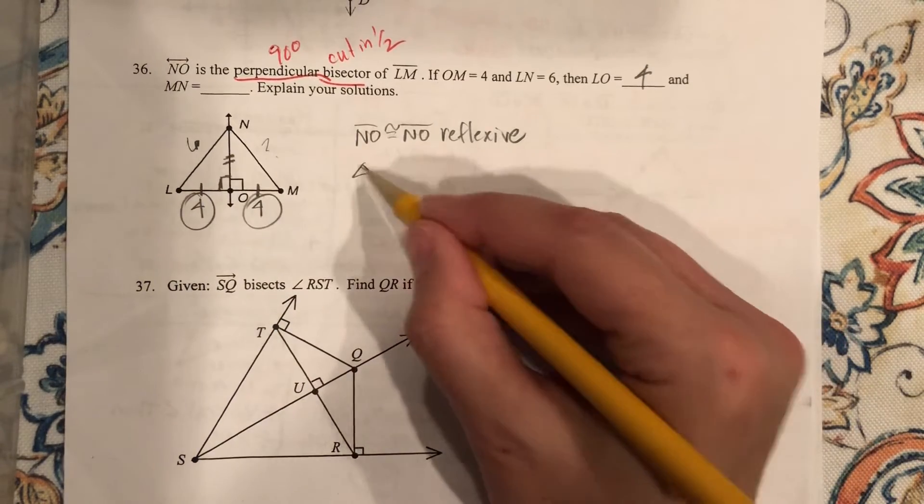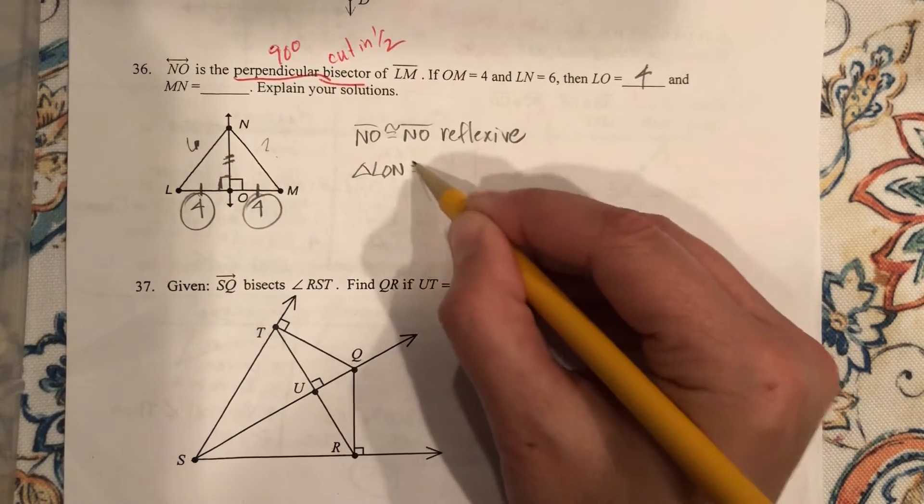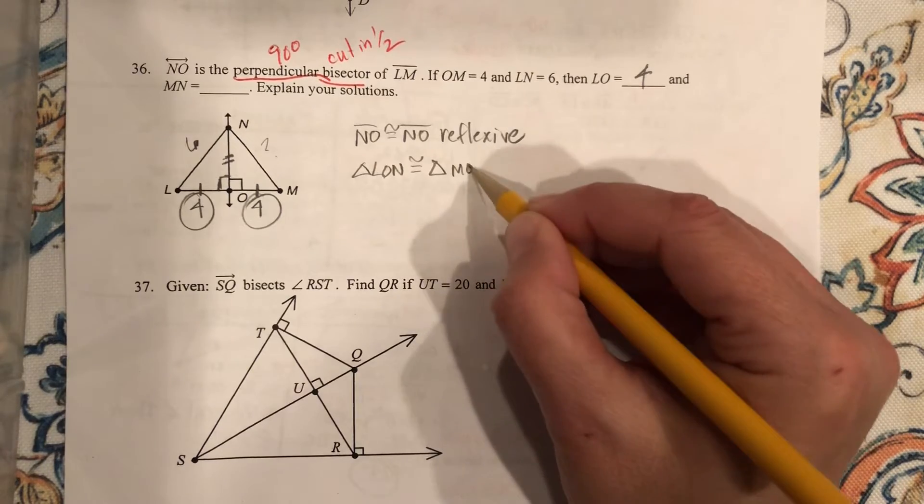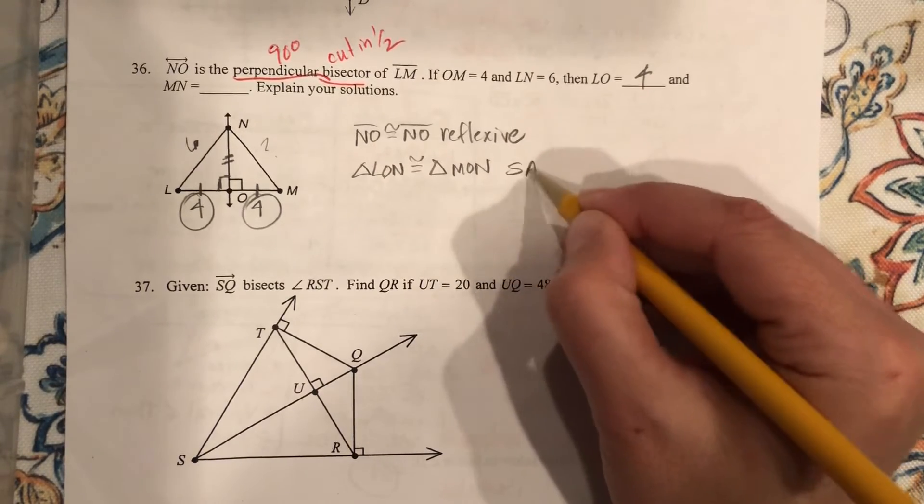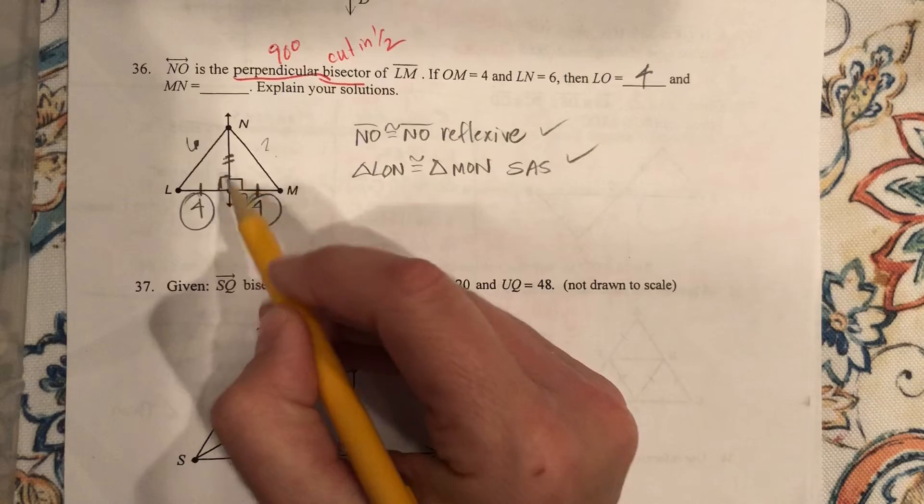So now I can say triangle LON is congruent to triangle MON by side, angle, side.